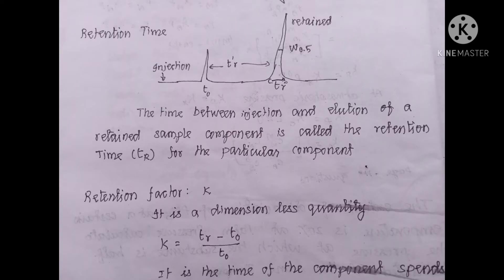The next very important concept is retention time. After injection of the analyte on the mobile phase from the top of the column, t₀ is the time of the unretained analyte coming out from the column. The x-axis is time and the y-axis is signal strength. t_r is the retention time where the analyte gets attached to the stationary phase. At the bottom of the peak, w_b is called the base width.